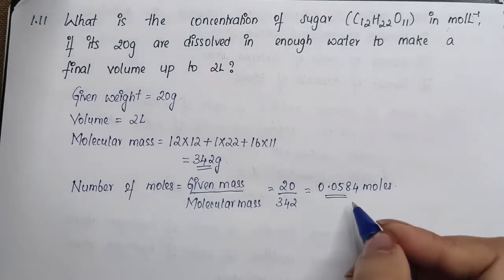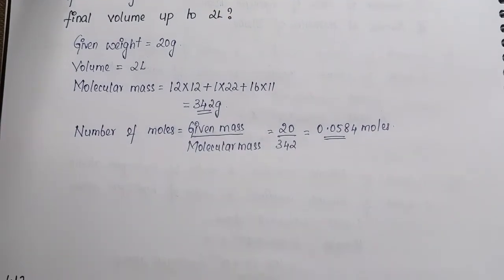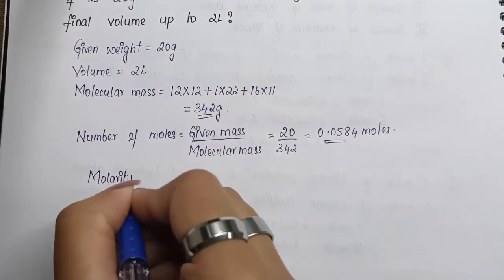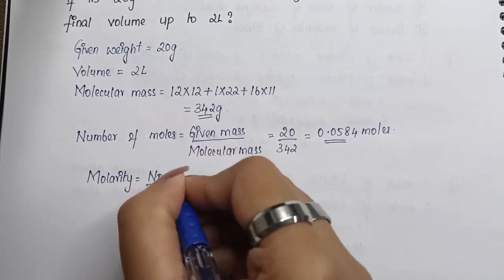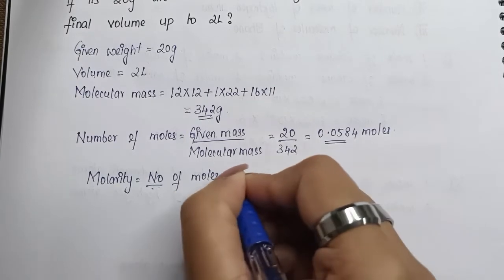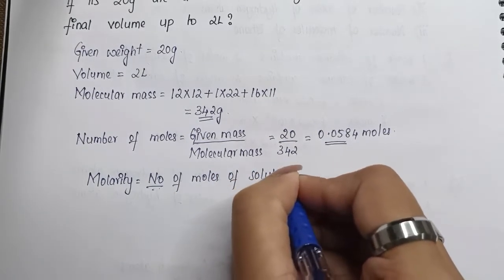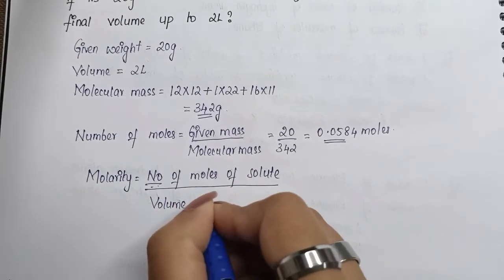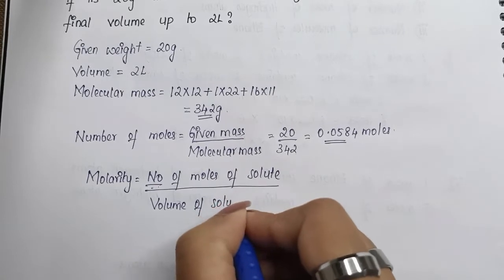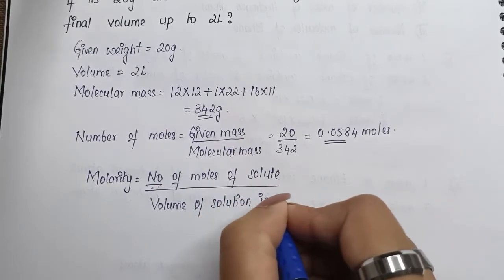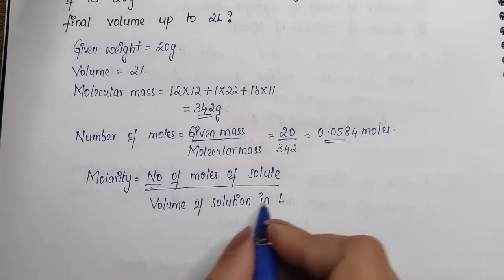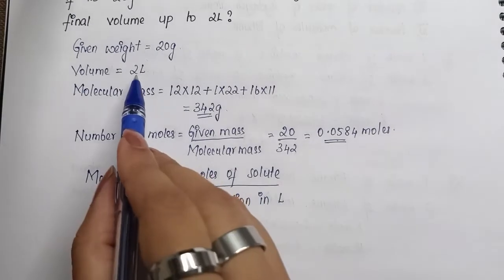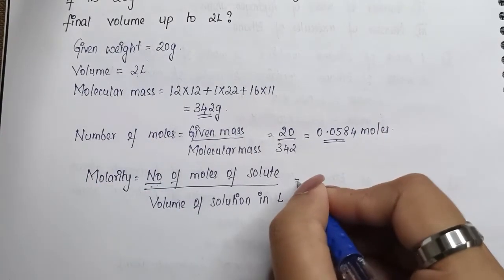So we have moles, now we will write down what is the formula for molarity. Molarity equals number of moles of solute divided by volume of solution in liters. Now we have this formula, number of moles we just found out, volume of solution in liters is given to us directly in the problem. We just have to substitute the formula.